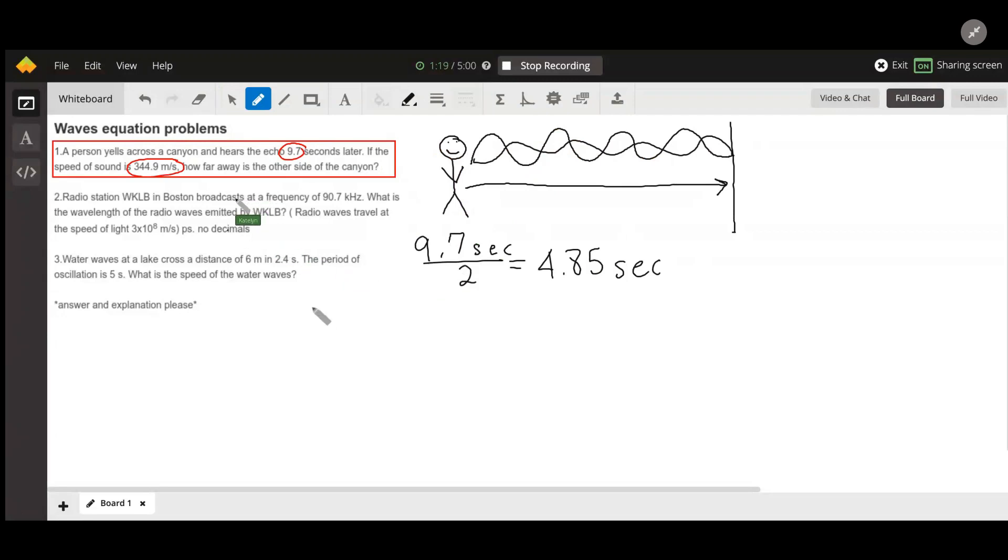So now it says that the speed of sound is 344.9 meters per one second. Now we can just use some unit cancellation here and multiply this by the 4.85 seconds. And these units will cancel and this remaining product will give us the length of this canyon.